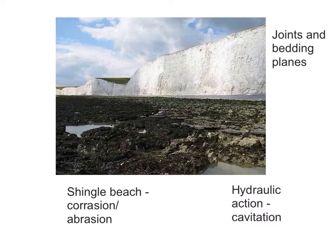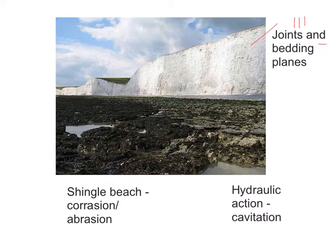Here's another photograph of a wave cut platform. In the foreground you can see rock pools filled with water, so you know the tide has gone out — it's low tide. A-level students should not only spot that this is chalk, but that it's full of joints, which are vertical cracks, and bedding planes, which are horizontal. You would be expected to describe the processes of erosion here.